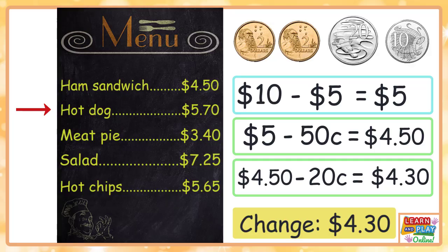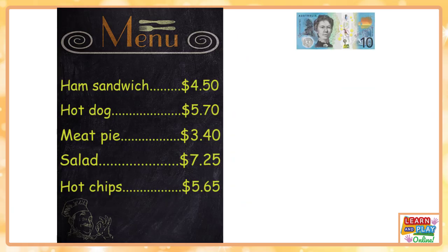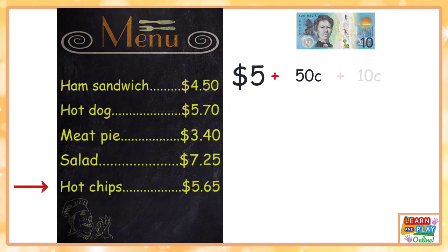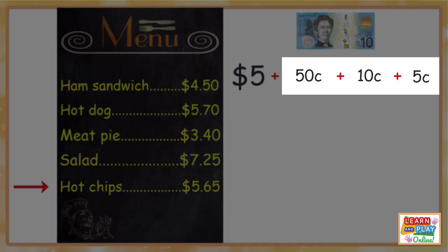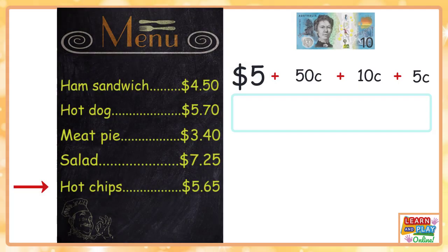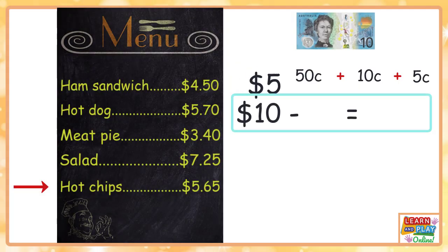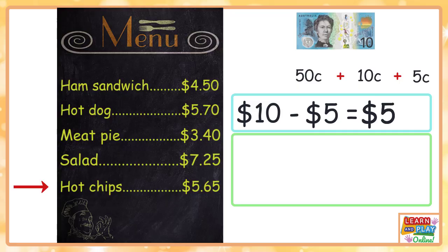So I would get four dollars and thirty cents change if I buy a hot dog costing five dollars seventy using a ten dollar note. Now let's calculate the change I would receive if I bought hot chips for five dollars and sixty-five cents with a ten dollar note. I'm going to represent five dollars and sixty-five cents as five dollars plus fifty cents plus ten cents plus five cents, because those amounts give me a total of sixty-five cents. Starting with the dollars: ten dollars minus five dollars equals five dollars. Now to subtract the cents — five dollars minus fifty cents leaves me with four dollars and fifty cents.